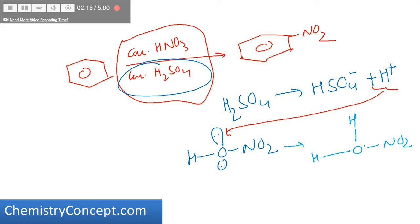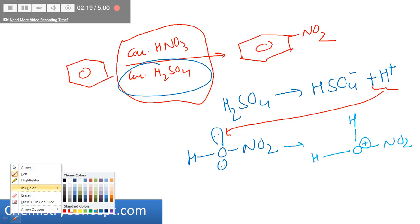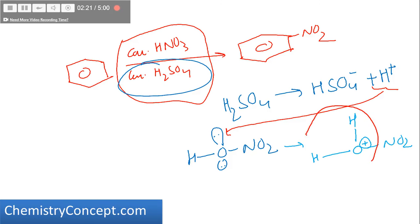In the next step, water goes and we are left with H2O plus NO2 positive. So winner of the fight is sulfuric acid. In front of nitric acid, sulfuric acid is a very strong acid. Nitric acid is also a strong acid, but in front of sulfuric acid, nitric acid has to accept the proton.